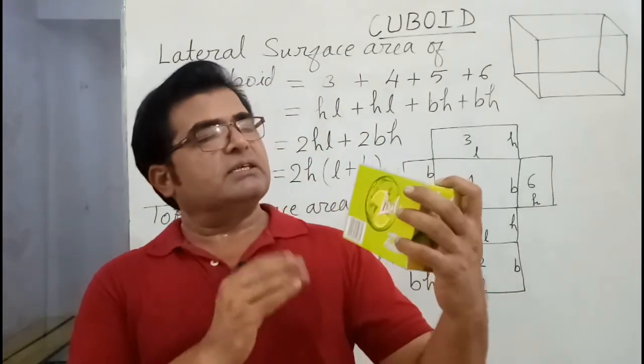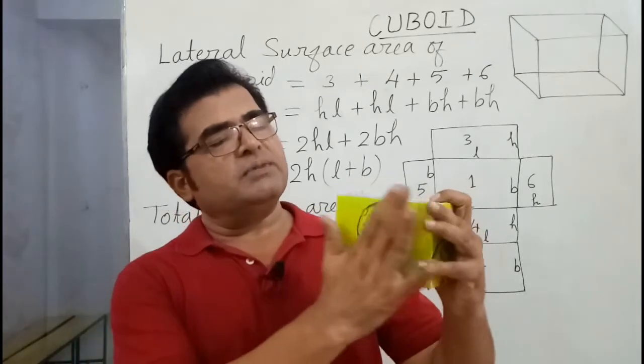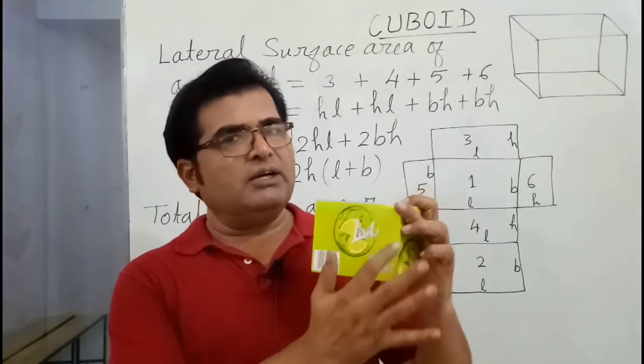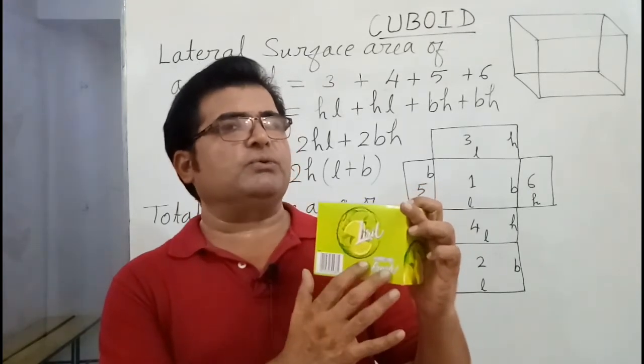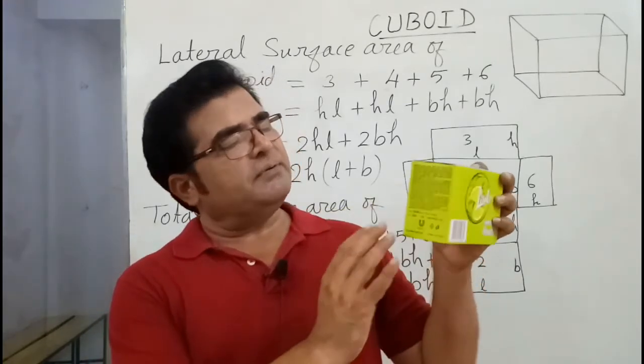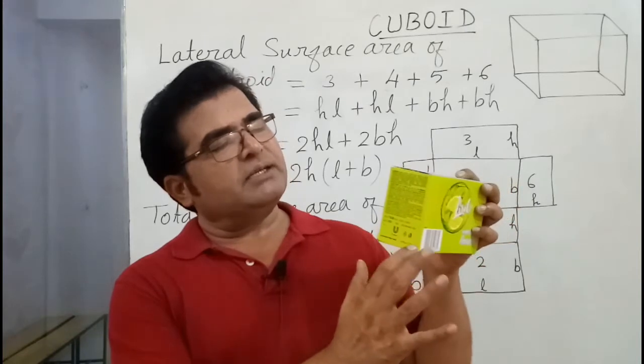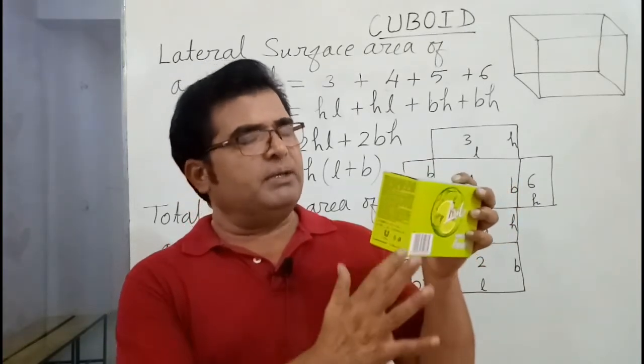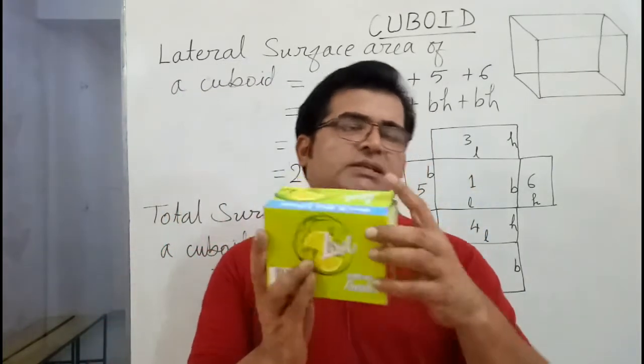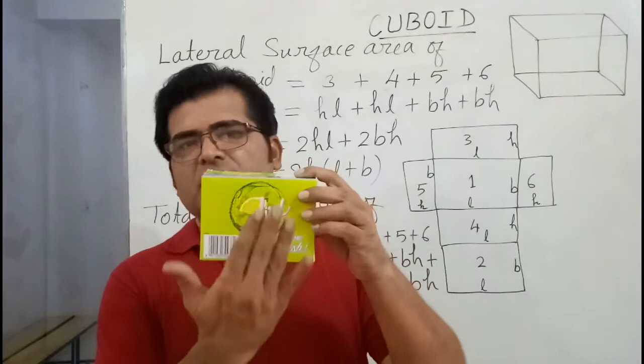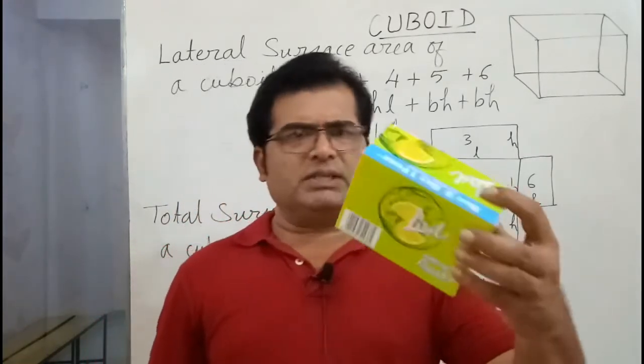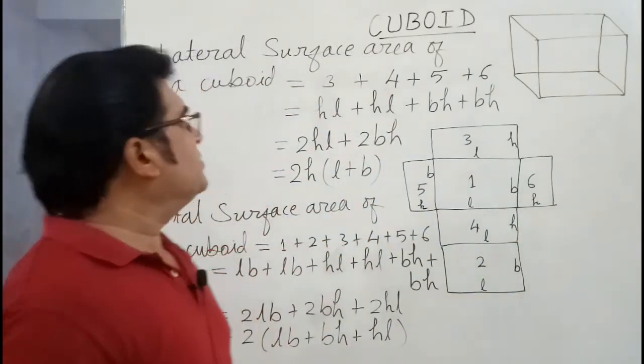When you use side faces, the formula is area of a rectangle L into B, but everywhere L into B will not be used. Because in the box, if you find area of this front face, the length will be used and height will be used, so L into H will be there. When you use this side face, the breadth will be used and height will be used, so it will be B into H. B into H for one face, then for another face also B into H. L into H for front face, then L into H will be for back face also.